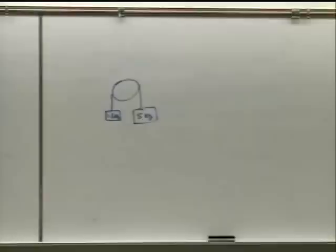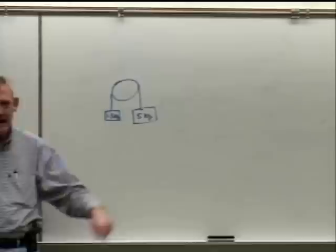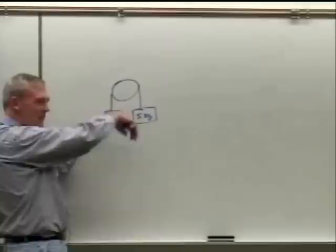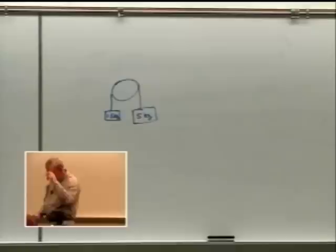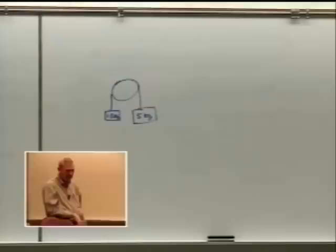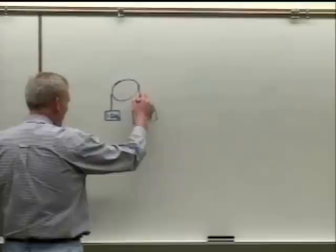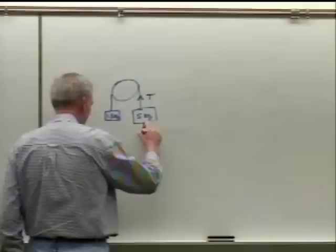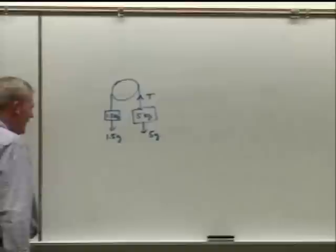Important assumptions: the pulley has no friction, and the rope is massless and doesn't stretch. The tension on both sides of the rope is the same. The 5-kilogram mass will accelerate downward, flipping the 1.5-kilogram mass upward — and they share the same magnitude of acceleration.